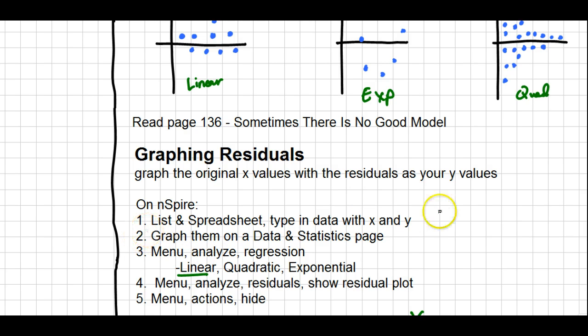Add a new tab by hitting Control-I and choose Data and Statistics. On here, you're going to graph the data or have the calculator graph the data. So let me illustrate what that looks like.